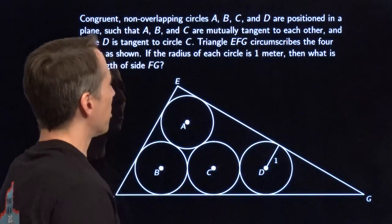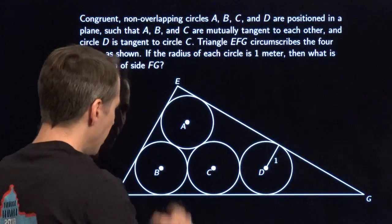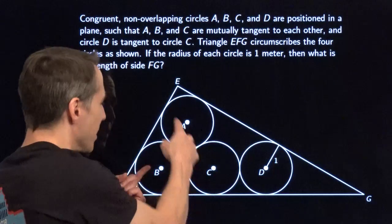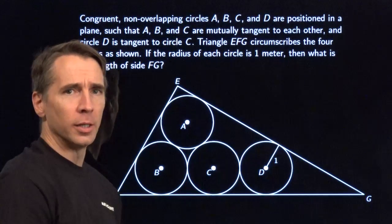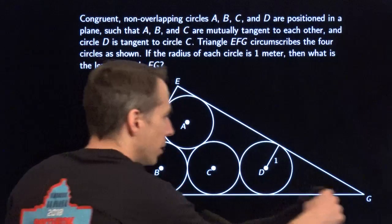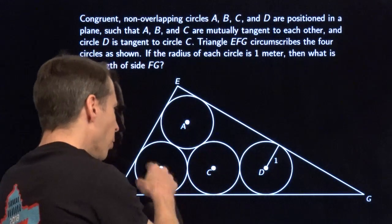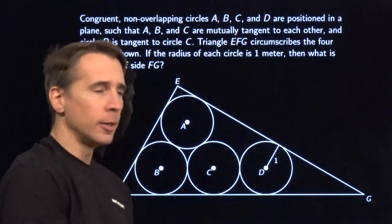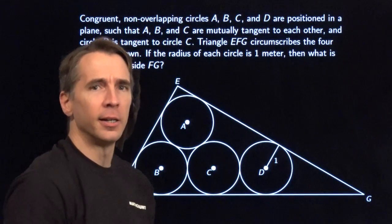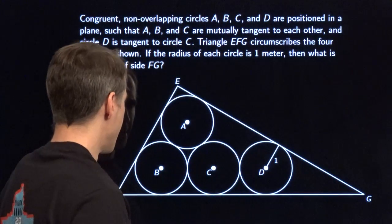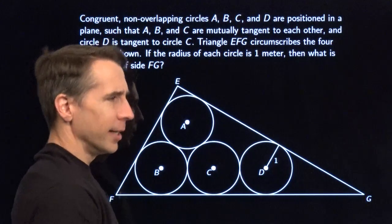We've got four non-overlapping congruent circles. In these three, each one is tangent to the other two. And this one out here is tangent to this one. And then we have a triangle out here that's tangent to all four of the circles. All four circles have radius one. We have to find the length of FG, this side down here. I got nothing, Harv. I need some help already. What you got?